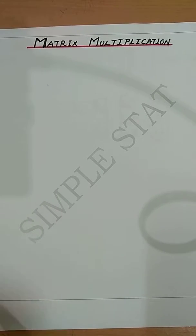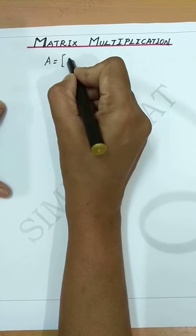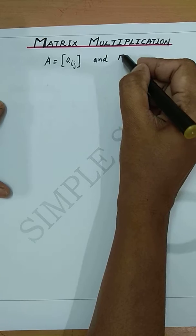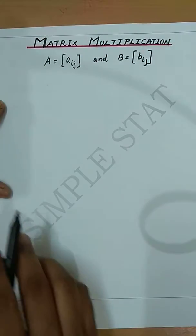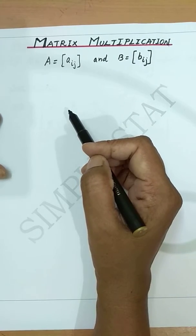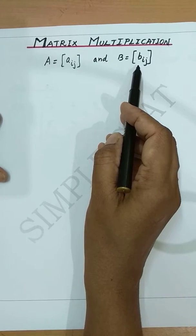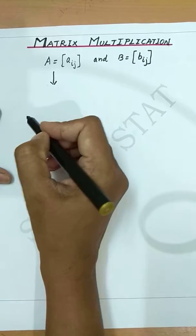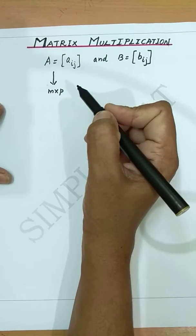Matrix multiplication: let A = [aij] and B = [bij] be any two matrices. These two matrices can be multiplied if and only if the number of columns in matrix A is equal to the number of rows in matrix B. That is, if A is a matrix of order M×P...